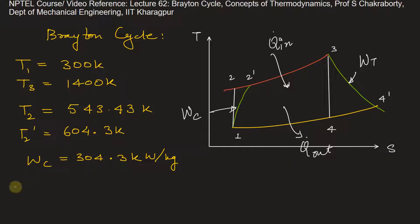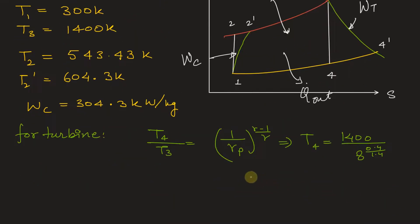Now for turbine, from the isentropic relation between 3 and 4, we can write T4 by T3 will be equal to 1 upon Rp to the power of gamma minus 1 by gamma. So from here we can find the value of T4 that will be equal to 1400 divided by Rp is 8, the compression ratio, 0.4 by 1.4. So from here T4 will be equal to 772.86 Kelvin.